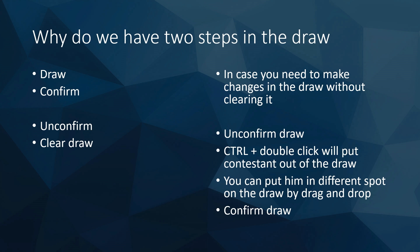There are two steps in the draw: draw and confirm, and unconfirm and clear. If you need to make changes without clearing, you can unconfirm the draw. Control double-click will put a contestant out of the draw, then you can drag and drop them to a different spot and confirm the draw again.